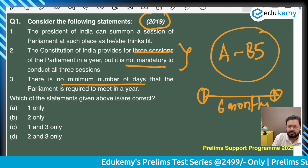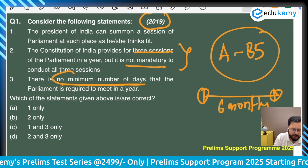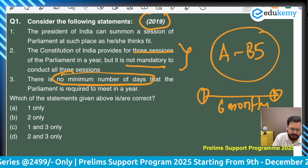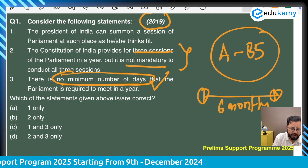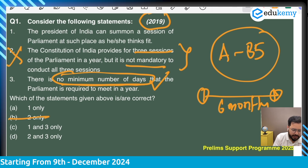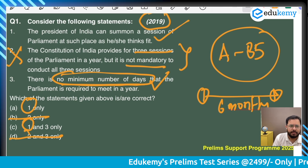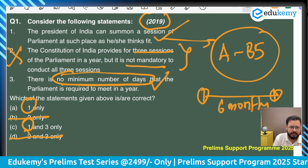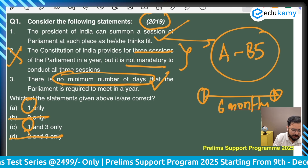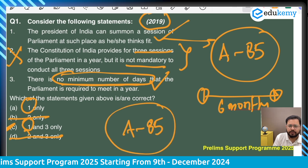There is no minimum number of days Parliament is required to meet in a year, so the second statement — that the Constitution provides for three sessions — is wrong. After eliminating it, statements one and three remain. The President can summon Parliament at such place as he thinks fit (Article 85), and there is no minimum number of days required. The answer is C (one and three). Article 85 is very important.